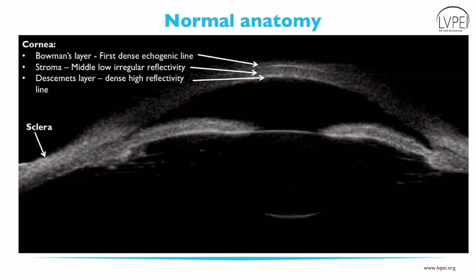The anterior chamber is seen as an echo-free area between the cornea and the iris. The iris is seen as a flat uniform hyperechogenic area. In general, the iris profile is straight. The iris and ciliary body converge in the iris recess and insert into the scleral spur. This scleral spur is the most important landmark in the angle on UBM. The scleral spur is seen as a small echogenic dot when the line between the sclera and ciliary body is traced to the anterior chamber.